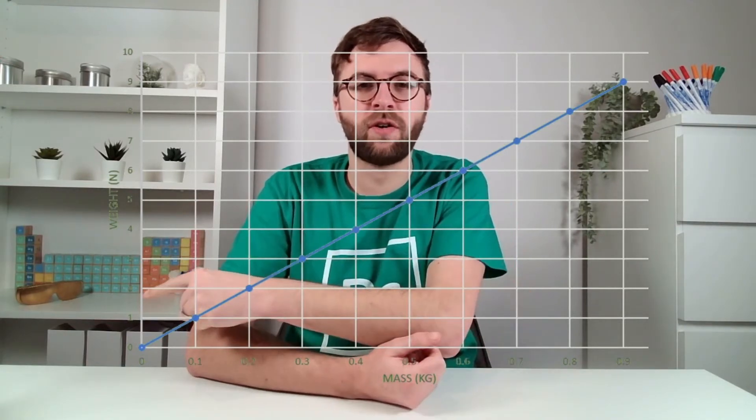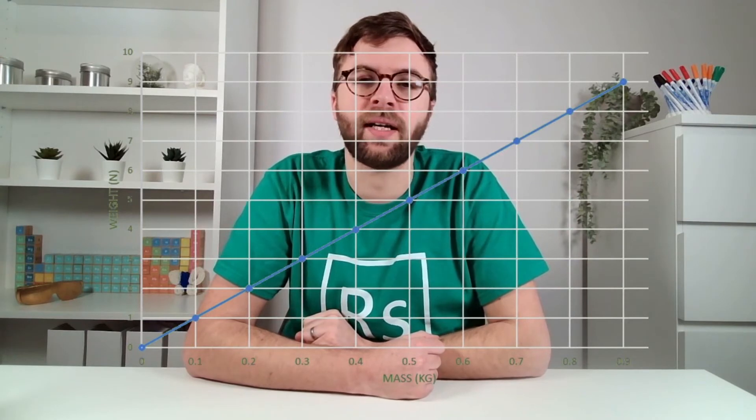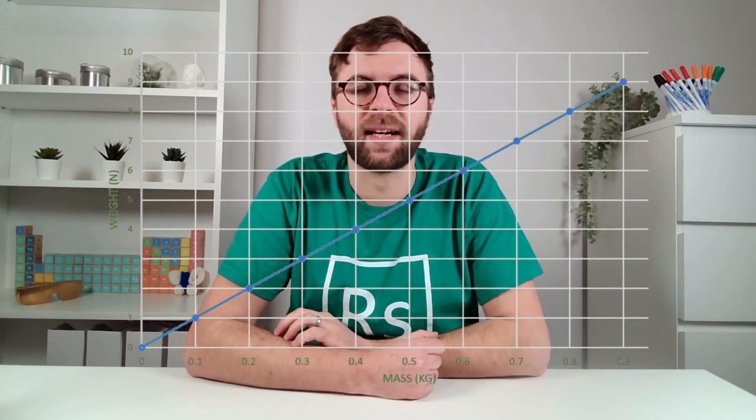Now we know this is a directly proportional graph because it goes straight through the origin here, and that straight line going up is indicative of a directly proportional graph. As one increases, so does the other, exactly the same rate.